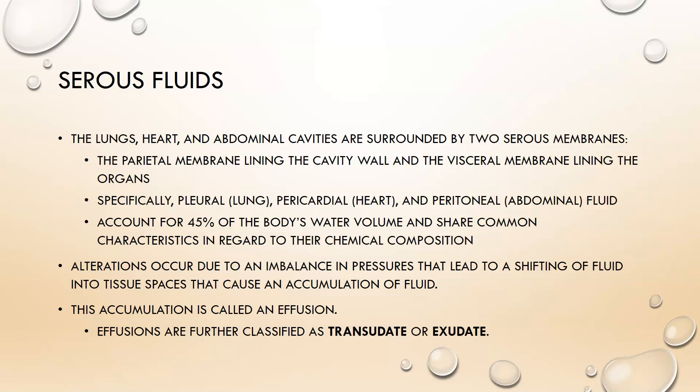The fluid in each of these cavities is: pleural fluid around the lungs, pericardial fluid around the heart, and peritoneal fluid in the abdominal cavity. These fluids account for 45% of the body's water volume and share common chemical composition characteristics. Alterations in these fluid volumes are due to an imbalance in pressures that can lead to shifting of fluid into tissue spaces, causing an accumulation called an effusion.